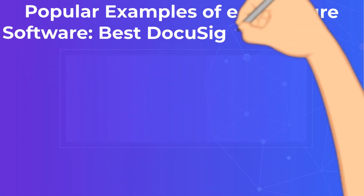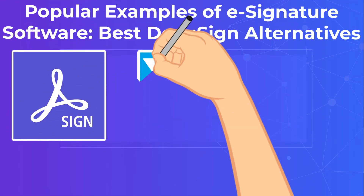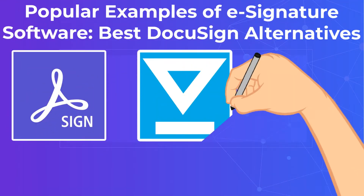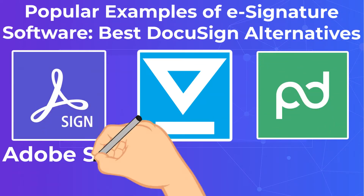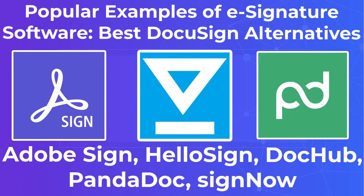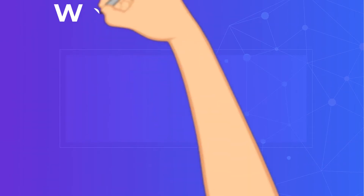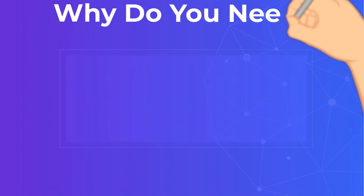Popular examples of e-signature software and best DocuSign alternatives include Adobe Sign, HelloSign, DocHub, PandaDoc, and SignNow. Why do you need custom solutions?